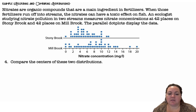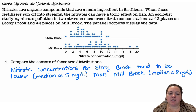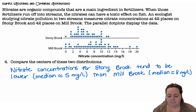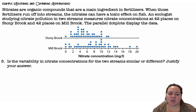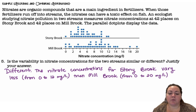Compare the centers of these two distributions: nitrate concentrations for Stony Brook tend to be lower, with a median at about 5 milligrams per liter, than Millbrook, which has a median at about 8 milligrams per liter. Is the variability in nitrate concentration for the two streams similar or different? Variability is talking about the spread — how spread out they are. Millbrook is a lot more spread out than Stony Brook, so they're different. The nitrate concentrations for Stony Brook vary less, from 0 to 12 milligrams per liter, than Millbrook, which ranges from 0 to 20 milligrams per liter.